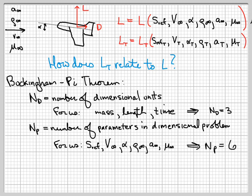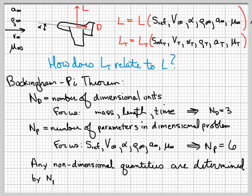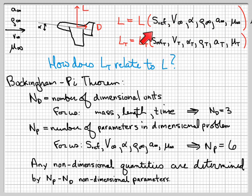I have a dimensional form of the problem where lift is a function of 6 dimensional parameters. When I non-dimensionalize the problem and look at a non-dimensional version of the lift — which we know will be the lift coefficient — it depends on np minus nd non-dimensional parameters. That's 3 for us: np minus nd is 6 minus 3, equals 3. So instead of a 6-parameter problem, I now have a 3-parameter problem.